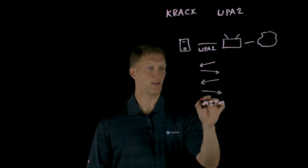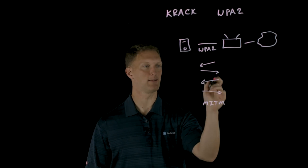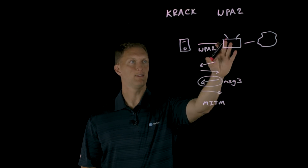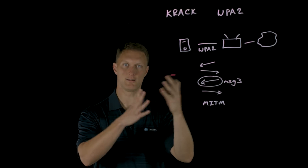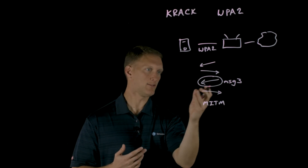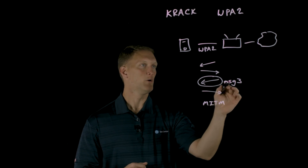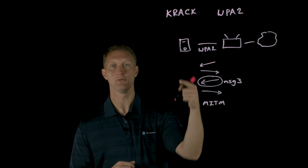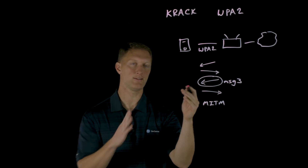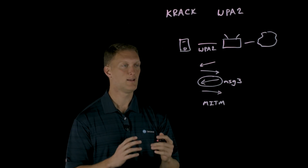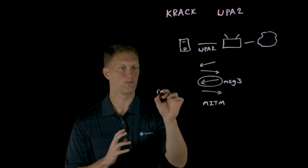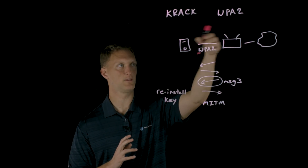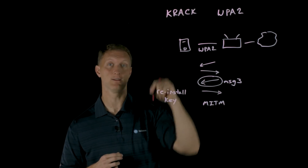Specifically, once someone has a man-in-the-middle position established between the two devices, I'm going to highlight message number three of the four-way handshake. This is the access point sending information back to the device saying we're starting to get encrypted. What the KRACK vulnerability allows the attacker to do is send several of these message-three messages back to the mobile device. When the mobile device receives multiple message-threes, it is going to reinstall the key that was generated to establish the secure communication — and that gets back to the 'key reinstallation' part of KRACK.